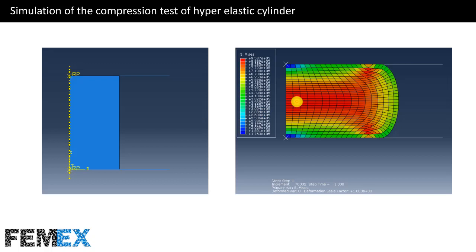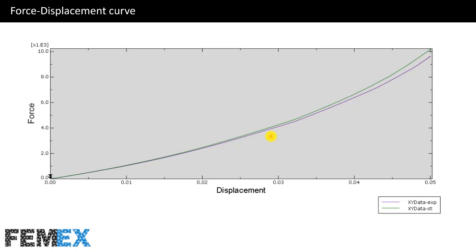This part is fixed and this part will move downward and compress the hyper-elastic cylinder. Finally, we will get this result — this is the Mises stress contour and this is the force displacement curve of the simulation. The loading is displacement controlled, so we must calculate the force displacement curve. The green curve is obtained using the static general step, and the purple curve is obtained using the dynamic explicit step. As you can see, the results are similar.